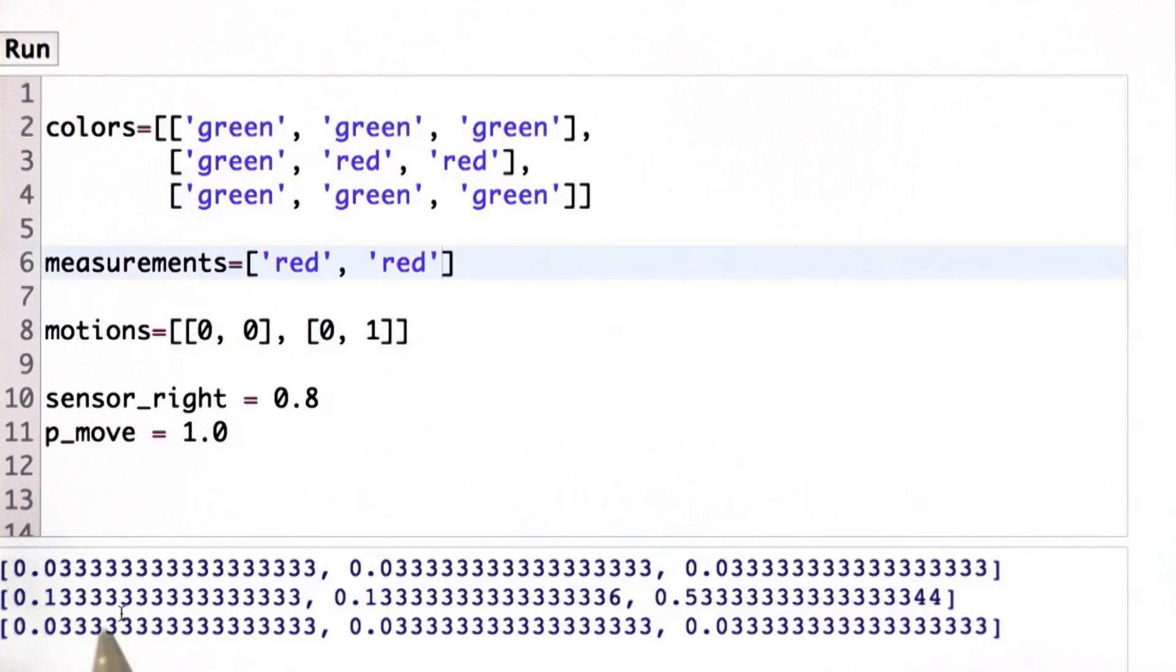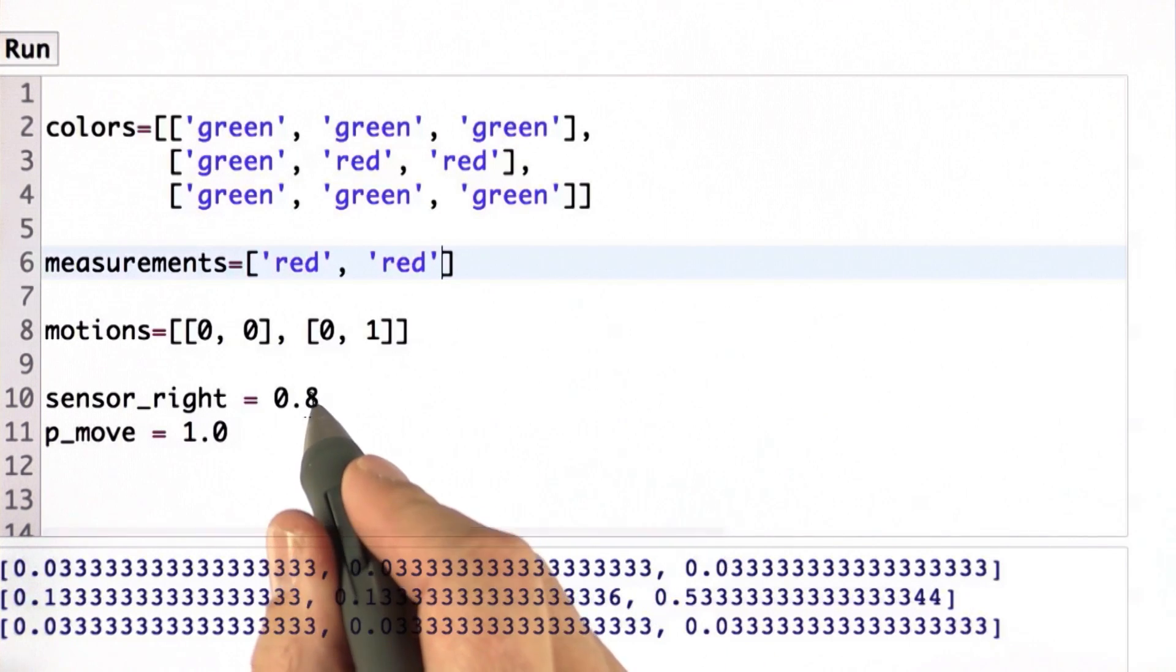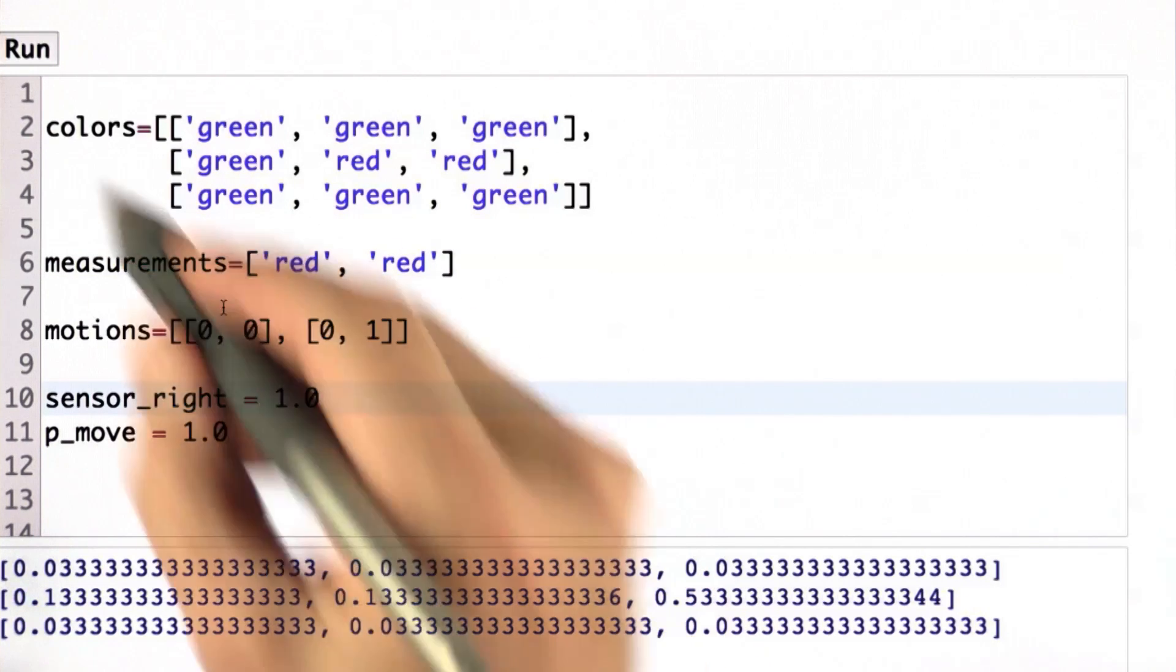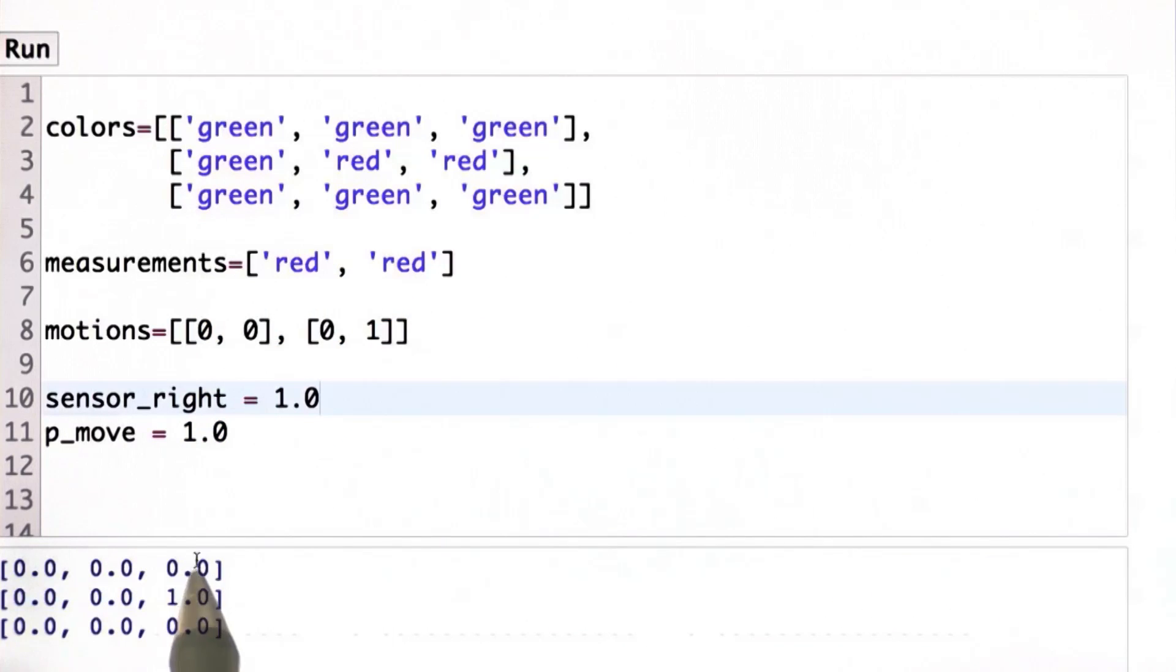So let's just check. And as predicted, almost all cells have a probability of 0.03, some of 0.13, but the one over here has a probability of 0.5333. If we set our sensor probability to 1.0, that is, there's no sensor noise, we get back this array over here, which assigns all probability to the rightmost cell.